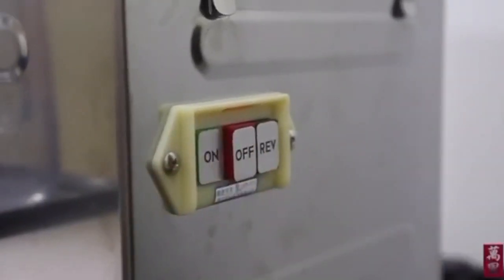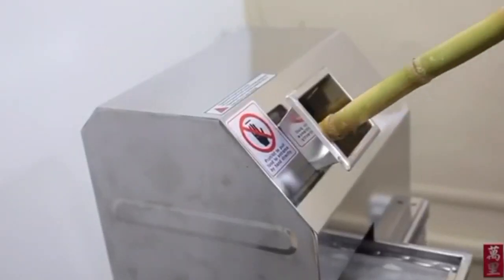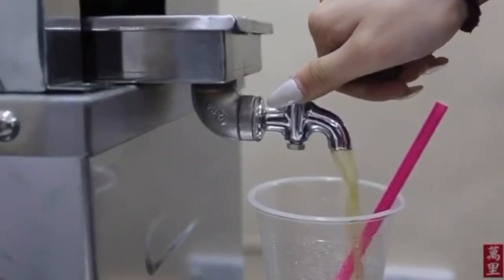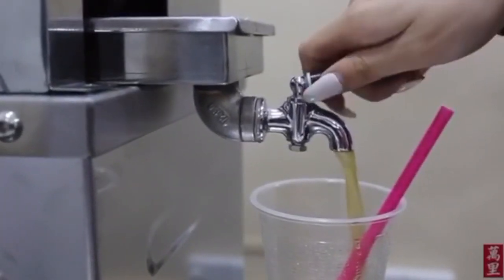To operate, switch on the machine. Next, insert the sugarcane, allowing the juice to sift through our inbuilt filtering system. Turn on the tap to dispense the juice.